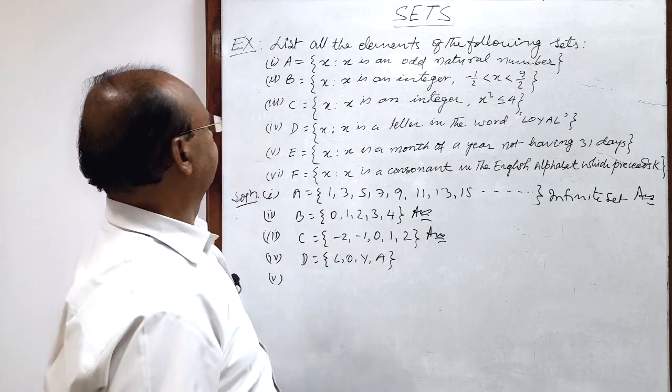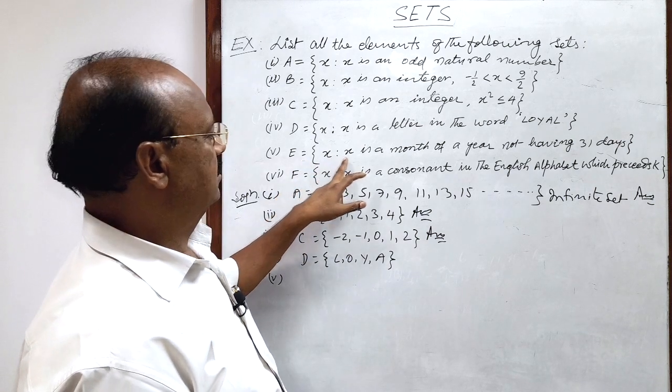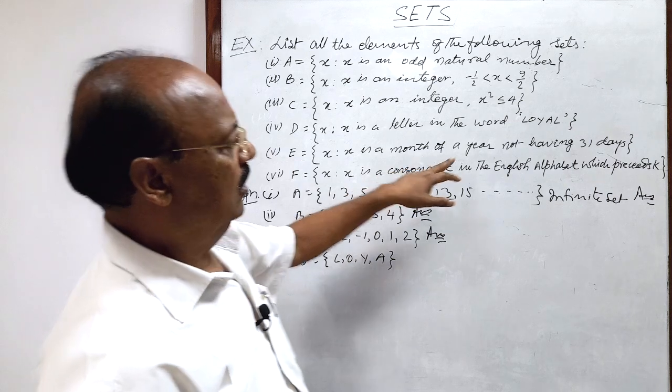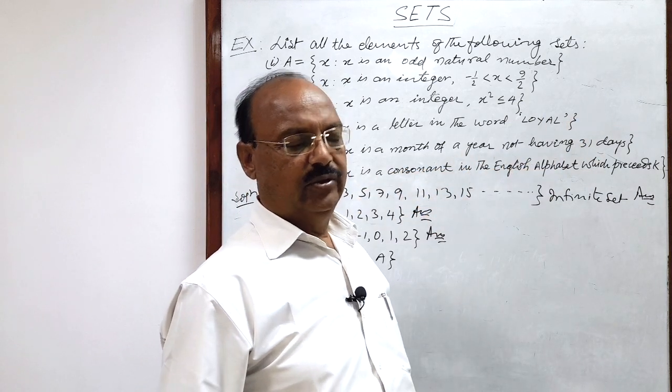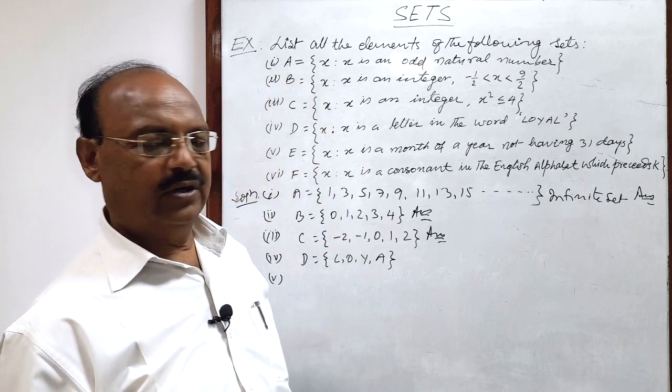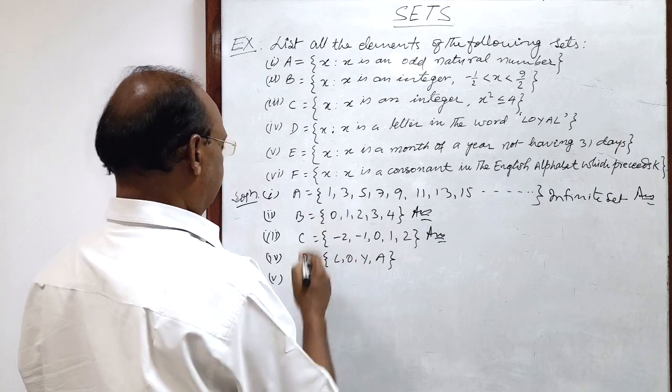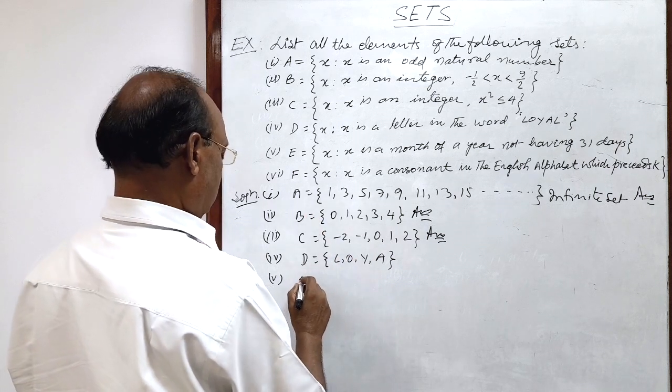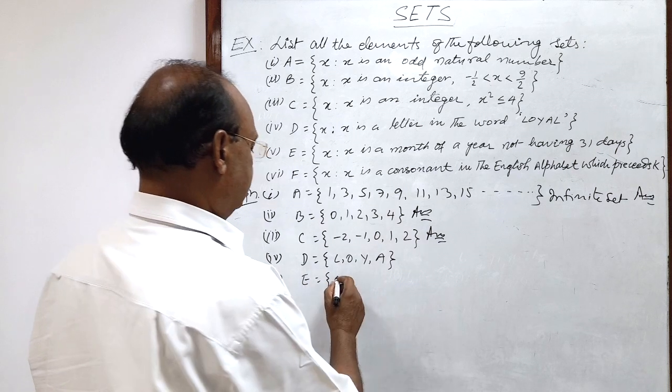Now next part, fifth, set e consists of x such that x is a month of a year, not having 31 days. So you know that there are some months in a year which are not having 31 days. So let us make the list of these months here. So set e, what are these months?